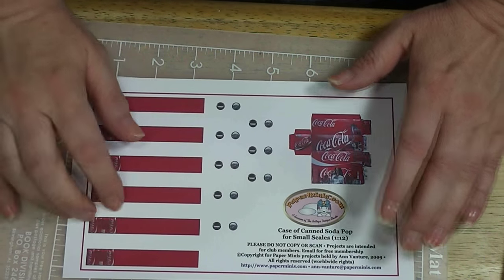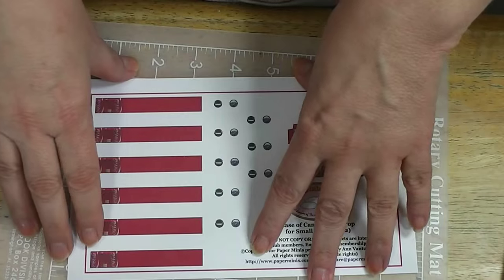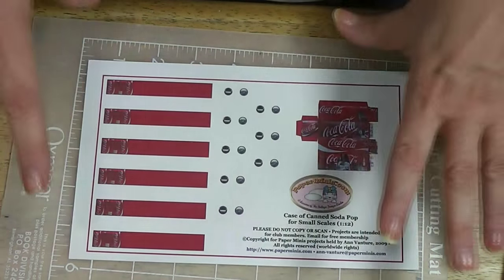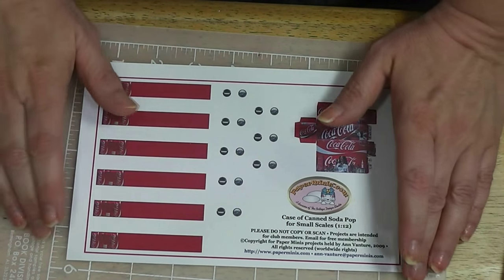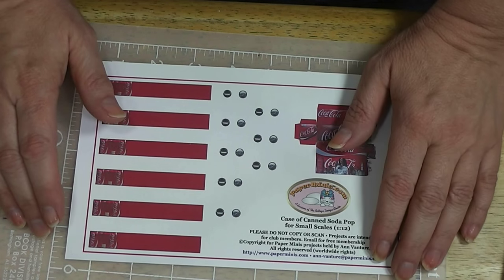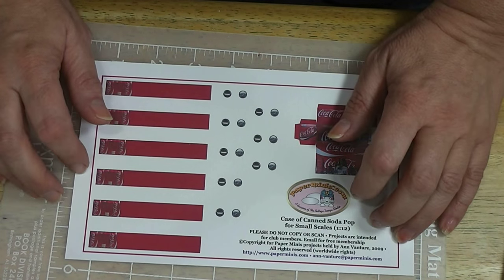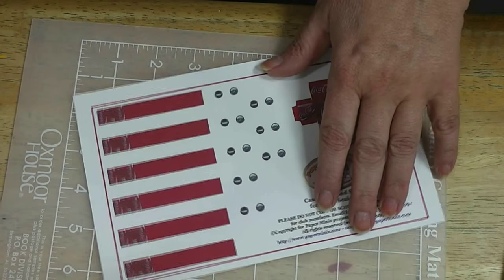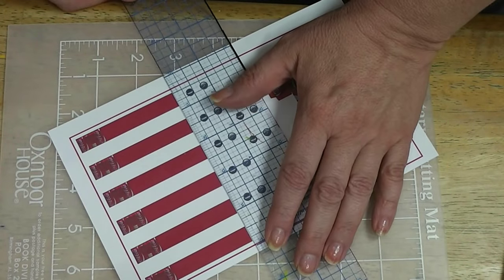So we're going to start by cutting. And to get these, all you need to do, there will be links in my blog. Just hop over to Ann's site, sign up for her newsletter, and in every newsletter there's a link to the complimentary projects. And she has a ton of them. These are on the first page.